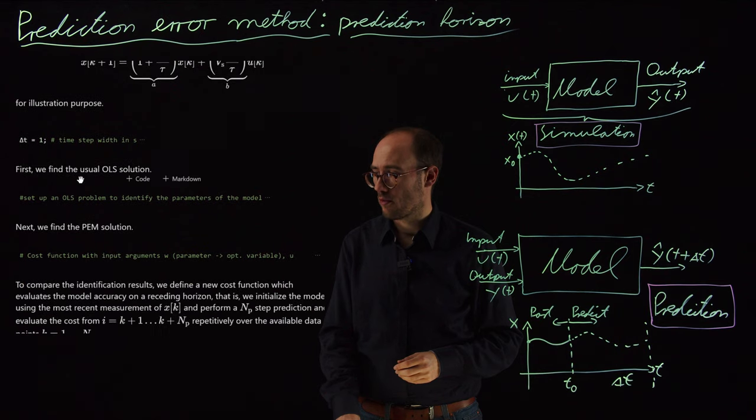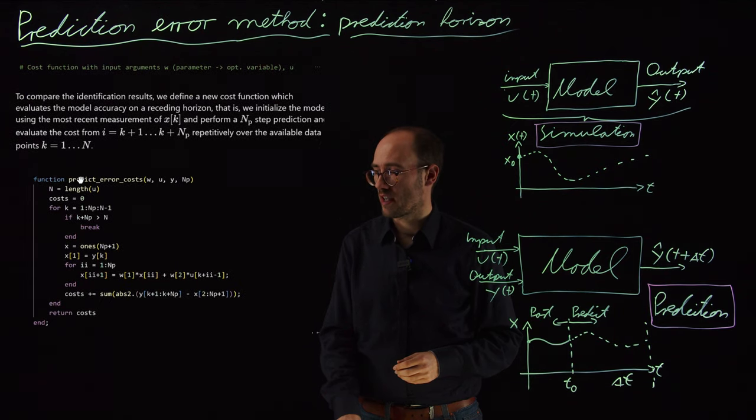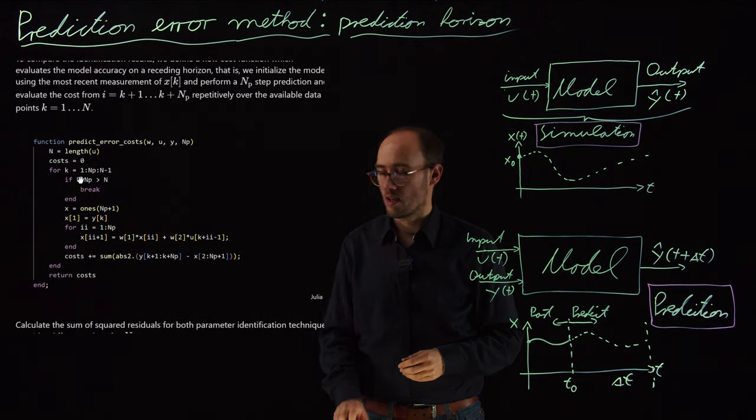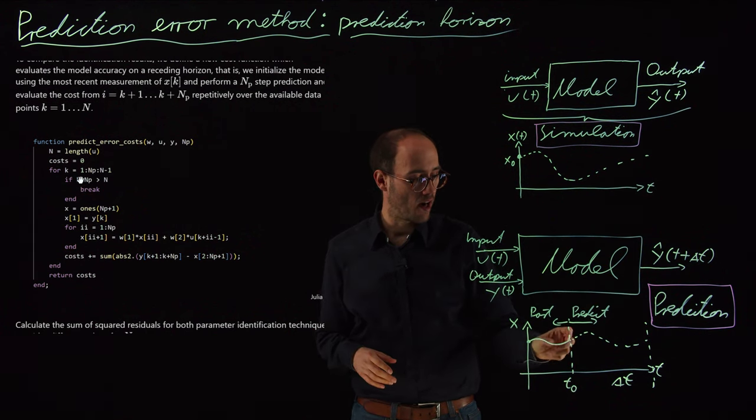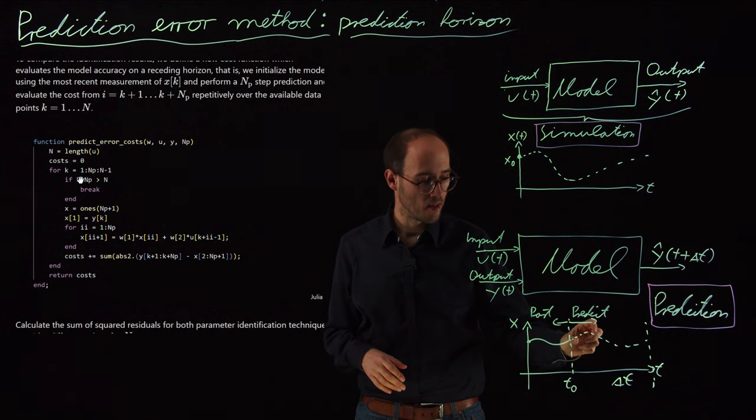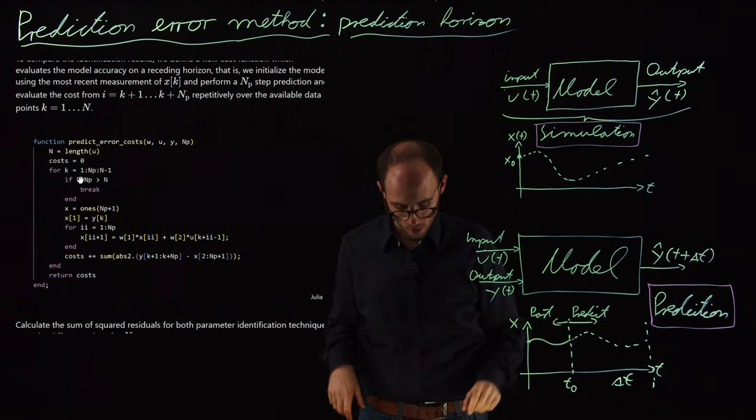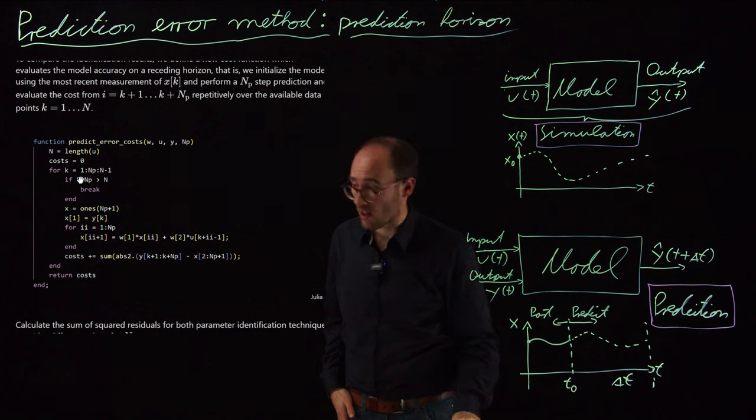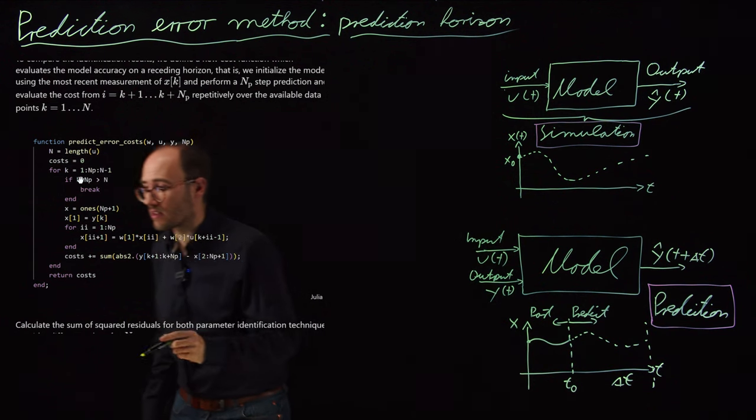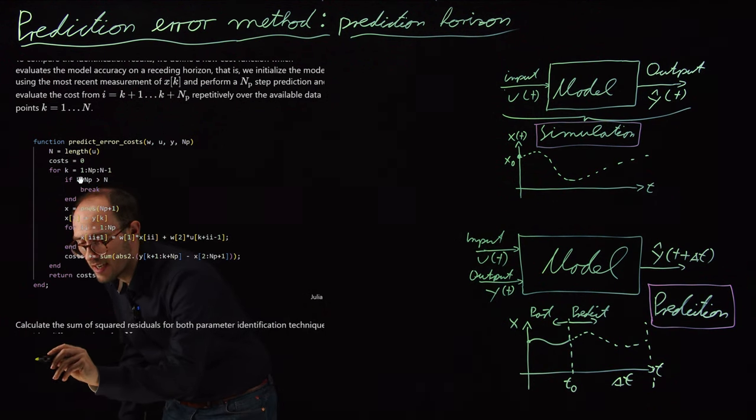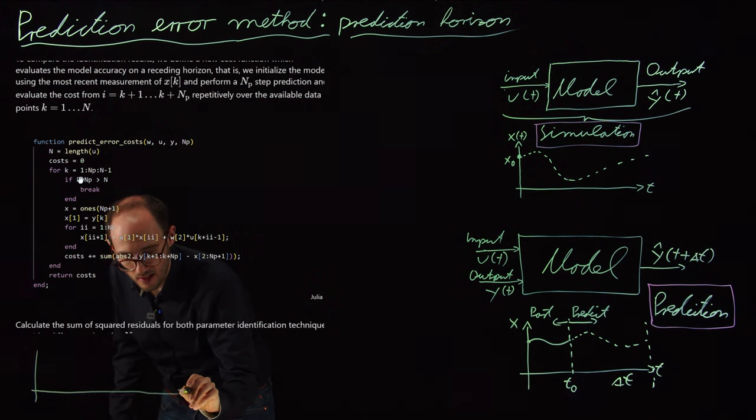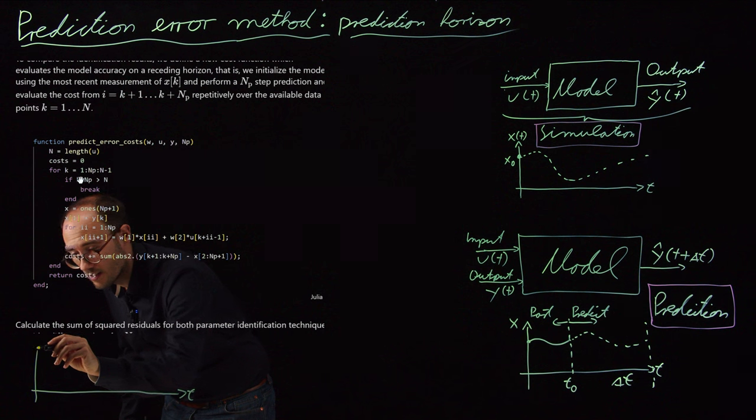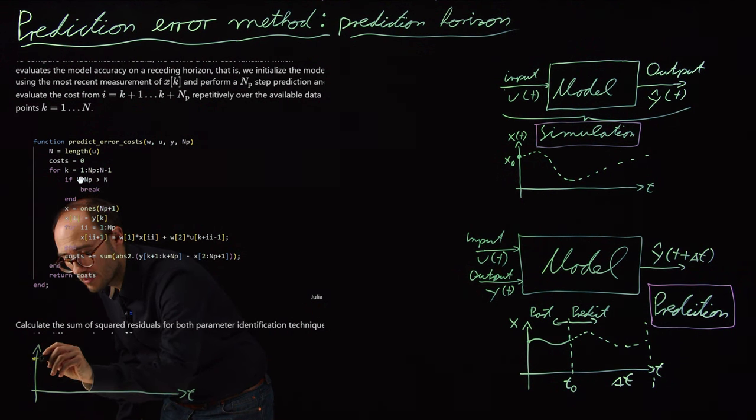If we do so, we first need to come up with a somehow new cost function. Because this cost function in the prediction case, where I only predict a certain amount of time, is a little bit different than in the simulation case. Let's sketch that, particularly what is the difference in the prediction case.